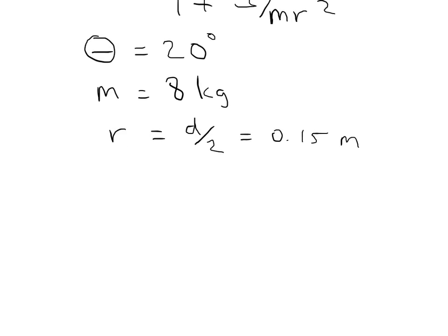I know that the radius of the pangolin is equal to its diameter over 2, which is 0.15 meters. And then I know that the moment of inertia of the solid ball is equal to 2 fifths m r squared. So I can do that calculation using this mass, 8 kilograms, and this radius, 0.15 meters.